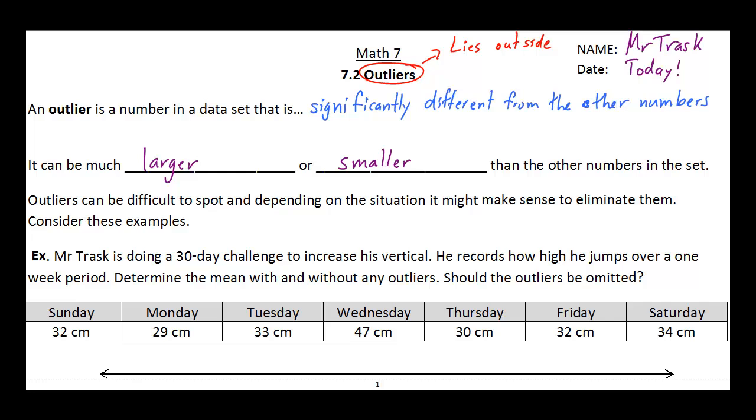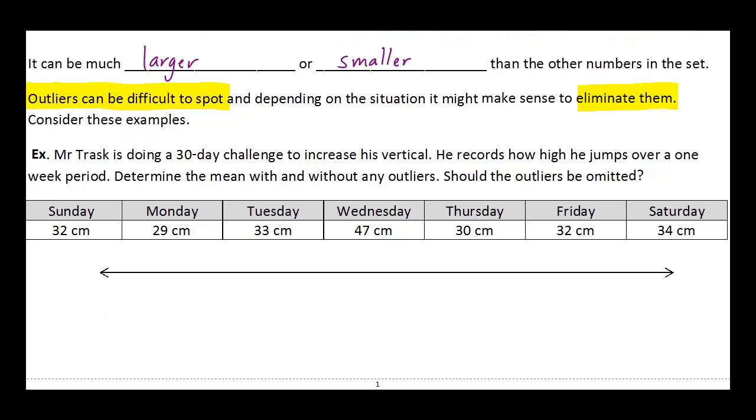The thing about outliers is outliers can be difficult to spot. And the thing about them is depending on what you're measuring, it may actually make sense to eliminate them. So when you take the average, whether it's the mode, median, mean, what have you, sometimes we're just going to take the outliers and just kind of throw them away and not deal with them. So let's look at a couple of quick examples here.